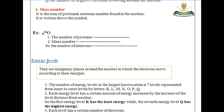Now let's go to energy levels. Energy levels are imaginary places around the nucleus in which electrons move according to their energies. The number of energy levels in the largest atoms is seven levels, represented by the letters K, L, M, N, O, P, Q. The K level is the least energy level.